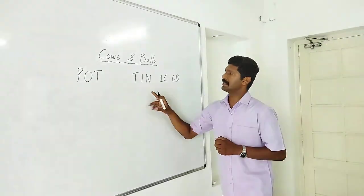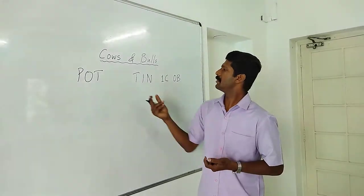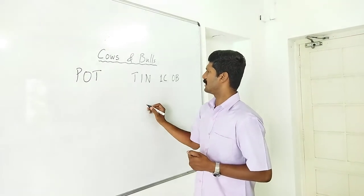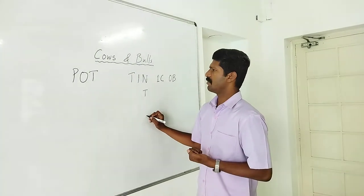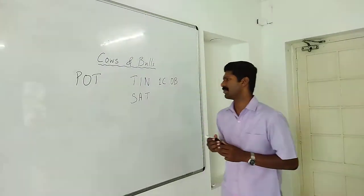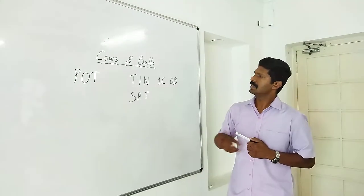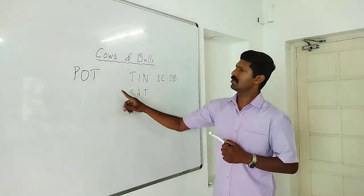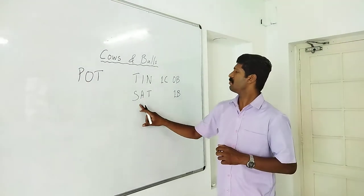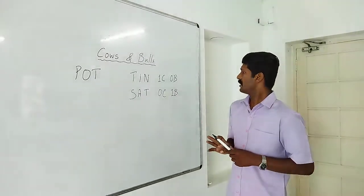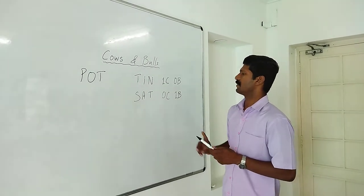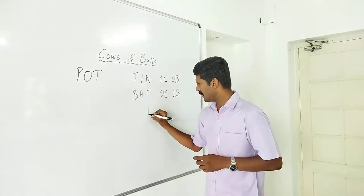So let's say one letter — T is correct. I will give you a guess to make the position correct. T is correct, and here is the position, so we will give you one bull — position is correct, letter is correct. If the two match, you get 0 cows. So this confirms that T is the correct letter.